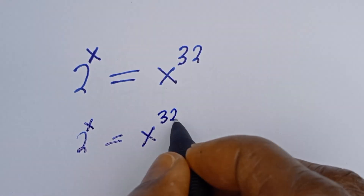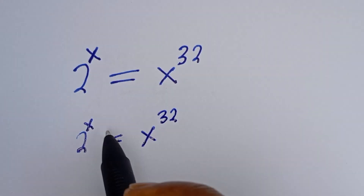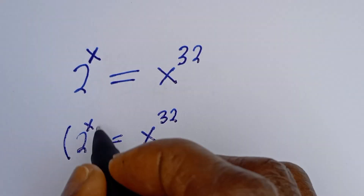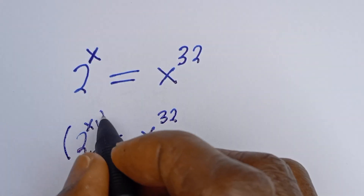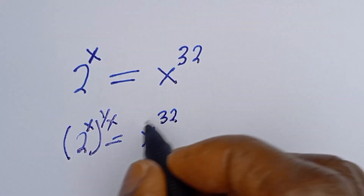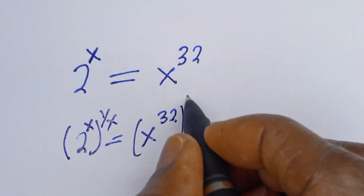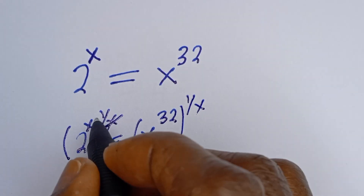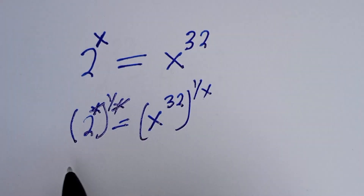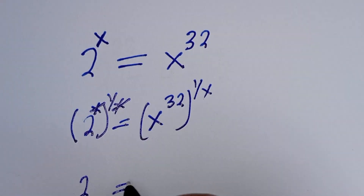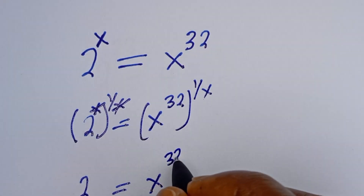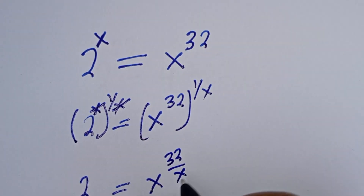Let's multiply the exponent of both sides by 1 over s. So 2 to the power of 1 over s, and s to the power of 1 over s — this will cancel, giving us: 2 is equal to s to the power of 32 over s.